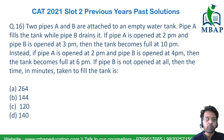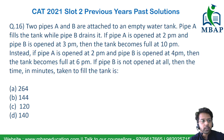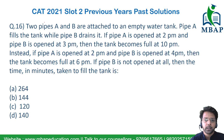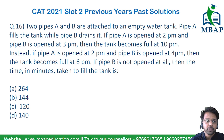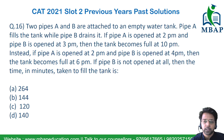The next question is from the topic of time and work. It's an easy question and all of you could have solved this in the examination too. The question says: two pipes A and B are attached to an empty water tank. Pipe A fills the tank while pipe B drains it. So A is working positively and B is working negatively.